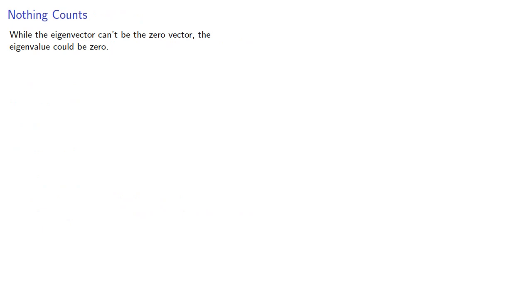While the eigenvector can't be the zero vector, the eigenvalue could be zero. So when would lambda equals zero be an eigenvalue? This would require a non-trivial solution to the equation.